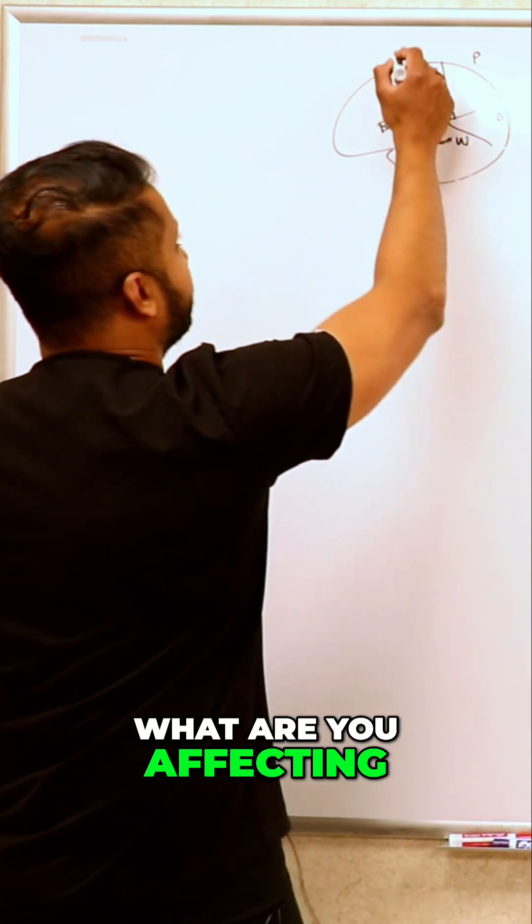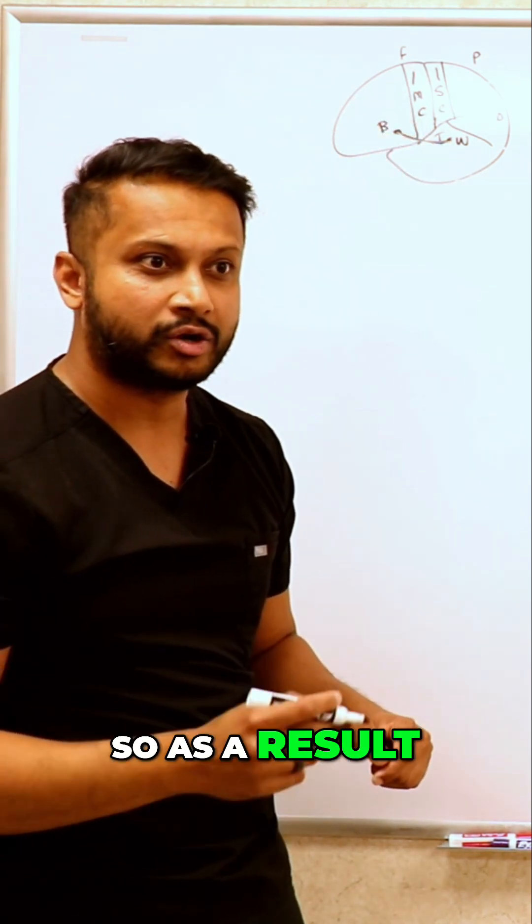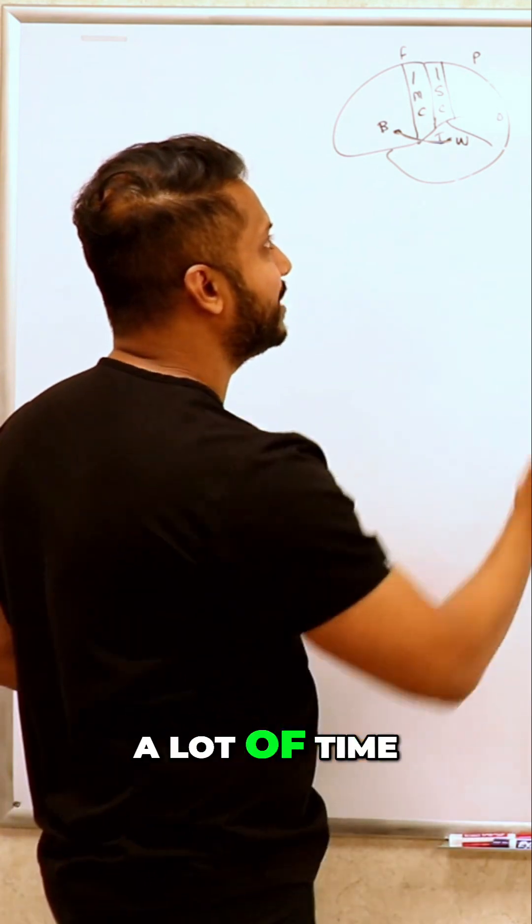What are you affecting when you do an MCA stroke? You're gonna take off your Broca's area, so as a result you're gonna have aphasia.